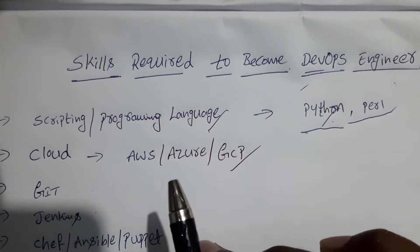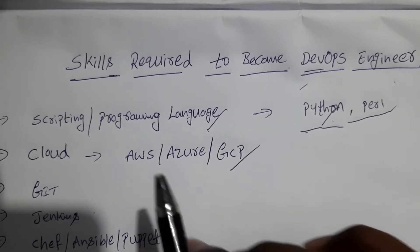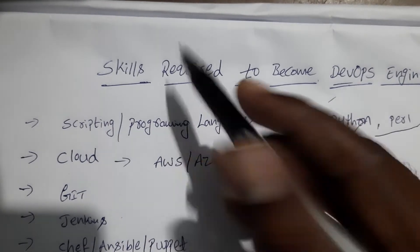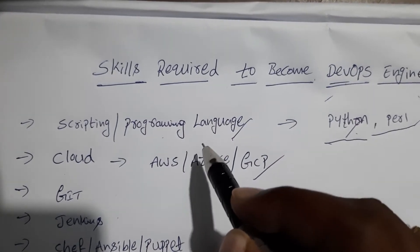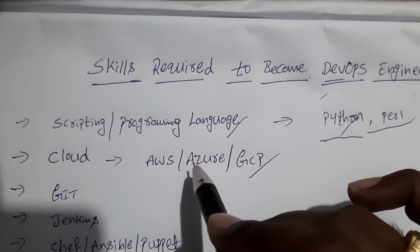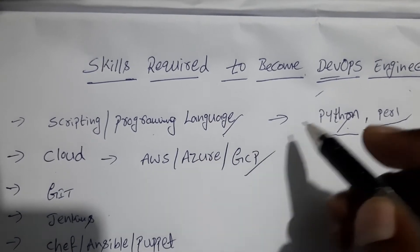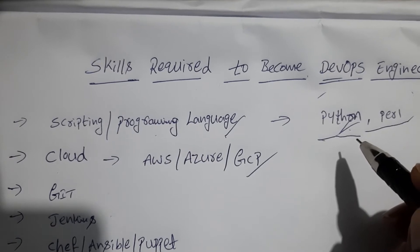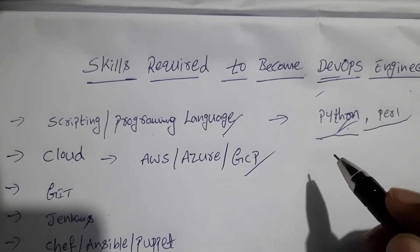Now let us see what are the skills required to become a good DevOps engineer. The first one is scripting and programming language. At least one scripting language along with shell scripting is necessary for a DevOps role. I recommend Python as the best suit for a DevOps engineer because it is easy to learn and widely adopted in the IT industry.